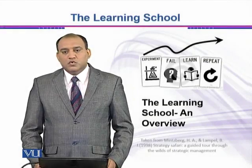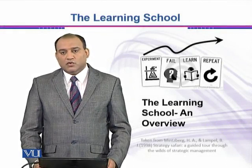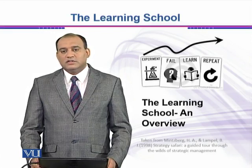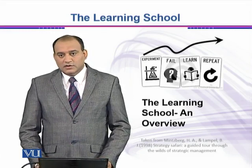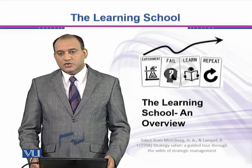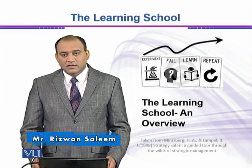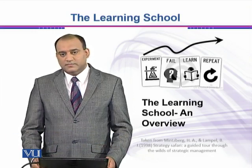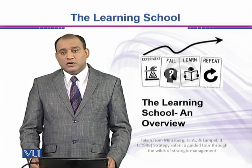Let us move to the very important part of the learning school — how it has evolved over the years. Before we move on, I would like you to spend a few minutes on the title diagram of this slide. You can see an arrow which is not smooth, with one and two curves, and four things written: Experiment, Fail, Learn, Repeat. This title diagram represents the learning process we have in our life, and the learning process in organizations is not different in any way.